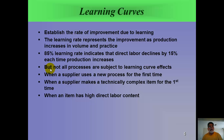The next item is learning curves. We know that as we do something over and over, we get better at it. What we're looking at is finding out what the rate of improvement is as we learn. The learning rate represents the improvement that happens as production increases in volume — the more we do, and through practice.